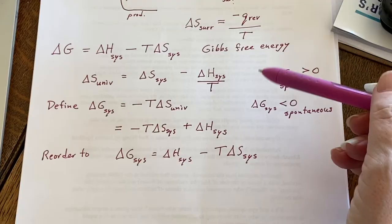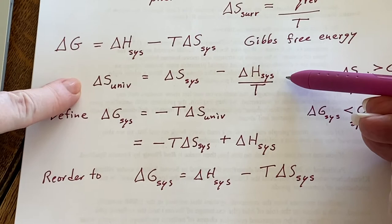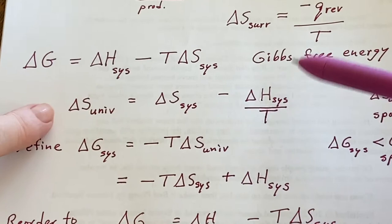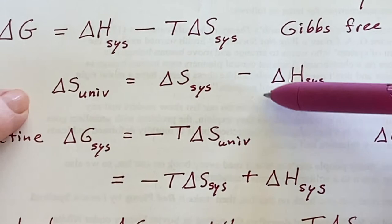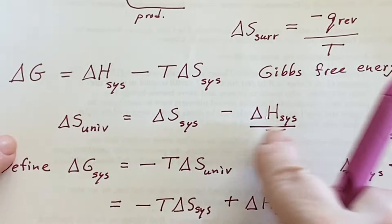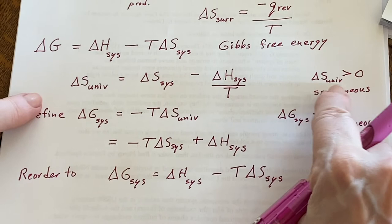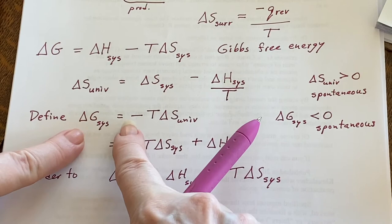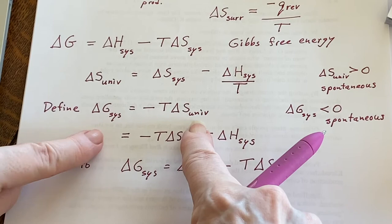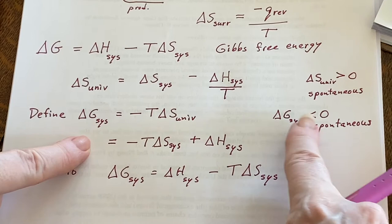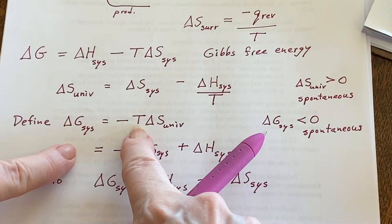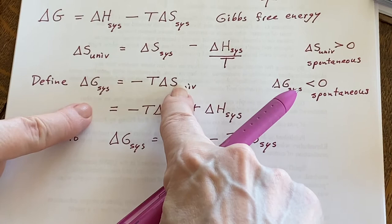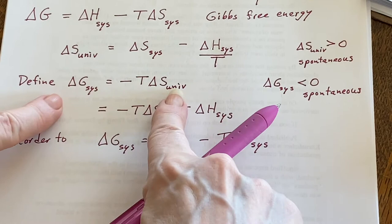Starting from delta S of the universe = delta S of the system minus delta H of the system over T, we can define delta S of the surroundings that way. Delta S of the universe greater than zero means spontaneous. If we define Gibbs free energy of the system as negative T times delta S of the universe, spontaneity changes sign: T is always positive in Kelvin, and delta S universe must be positive for spontaneity, so with the negative out front, delta G of the system must be negative for a spontaneous process.